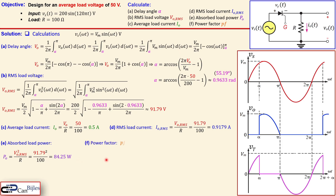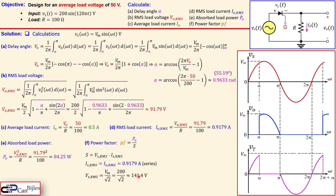The power factor is defined as load power divided by apparent power S, where S equals the RMS source voltage times the RMS source current. The RMS source current equals the RMS load current = 0.9179 A, since it is a series circuit. The RMS source voltage is the peak value divided by √2, which is approximately 141.4 V. The apparent power is therefore 141.4 × 0.9179 ≈ 129.8 VA. The power factor is then 84.25 / 129.8 ≈ 0.649, approximately 0.65.